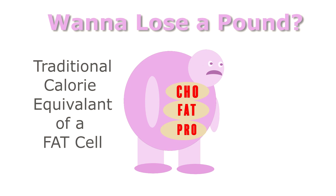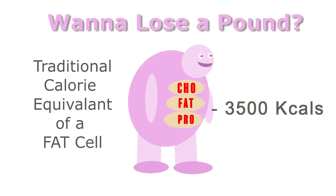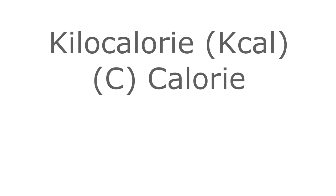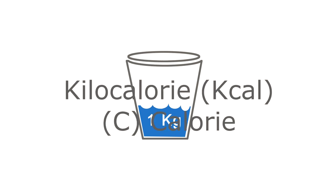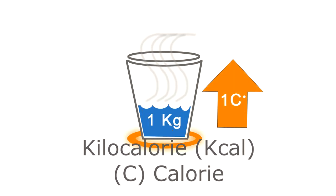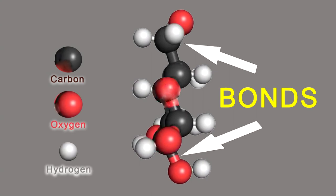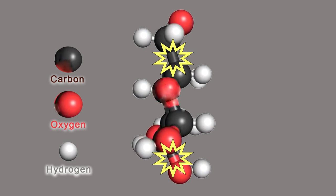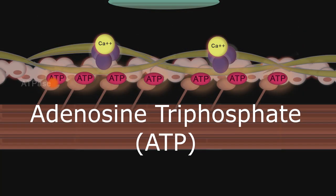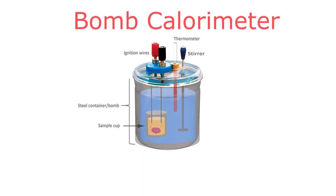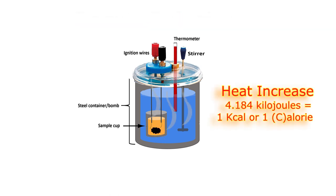Traditionally, it's been said that if you want to lose a pound of unwanted body weight, you would need to exhaust around 3,500 kcals in energy from the body's stored substrates of carbohydrates, fats, and proteins. A kilocalorie, or large calorie, is a nutritional energy equivalent based on the amount of heat required to raise the temperature of one kilogram of water by one degree Celsius. Every food has a caloric equivalent because all food has molecular bonds of carbon, oxygen, and hydrogen that, when broken, release energy that can be synthesized by the body to make adenosine triphosphate, which is required to initiate muscle contraction. In the laboratory, these food molecules can be broken by burning the food in a bomb calorimeter, and the resulting heat can be measured in kilojoules to estimate how much potential energy the food could provide to the body. One kcal is equivalent to about 4.184 kilojoules of heat energy.